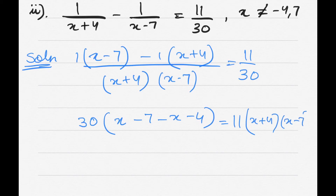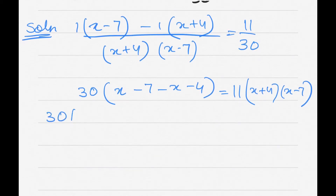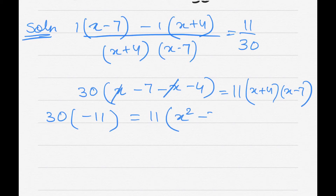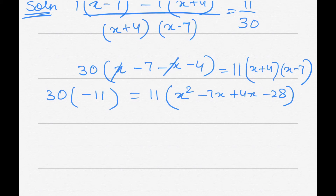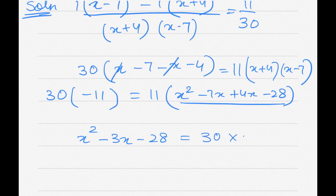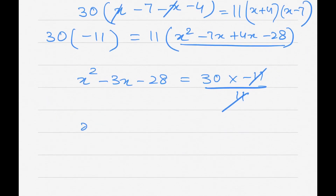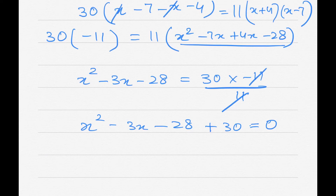After cancellation, the x terms cancel and we get 30 × (-11) on the left. On the right, expanding the binomials: x² - 7x + 4x - 28 = x² - 3x - 28. Dividing both sides by 11 and rearranging: x² - 3x - 28 + 30 = 0, which simplifies to x² - 3x + 2 = 0.